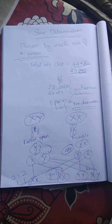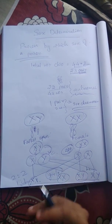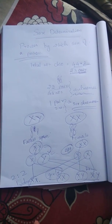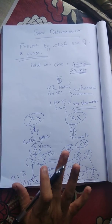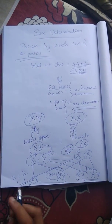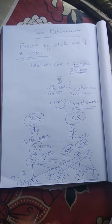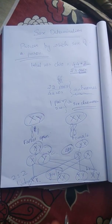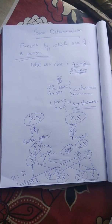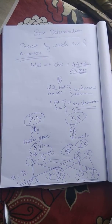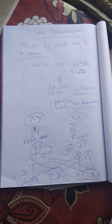Basically, gender discrimination — preferring boys over girls — is not good. Whether the child is female or male, gender discrimination should not happen. So basically, some questions to review: prove that the chance of having boys to girls is 50%.